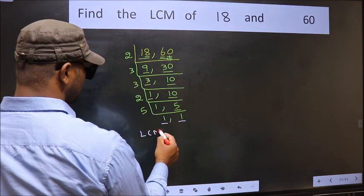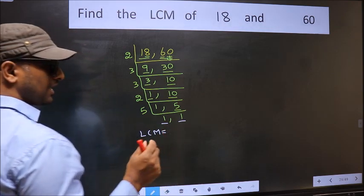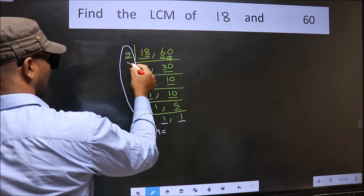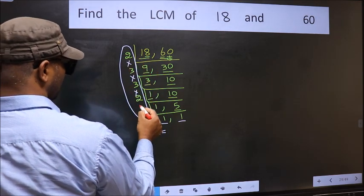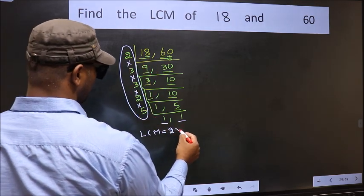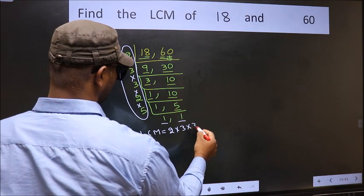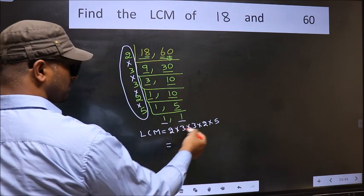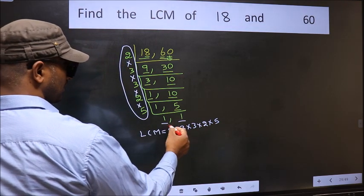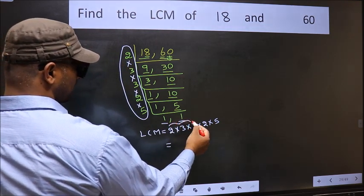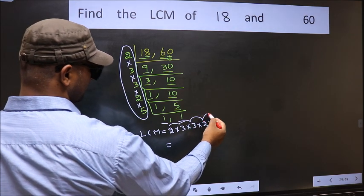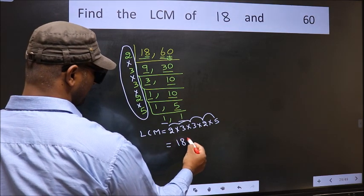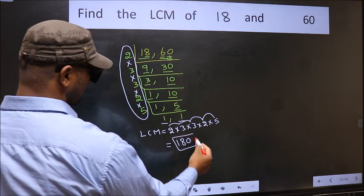So our LCM is 2 into 3 into 3 into 3 into 2 into 5. So let us multiply these numbers: 2 into 3 is 6, into 3 is 18, into 2 is 36, into 5 is 180. So 180 is our LCM.